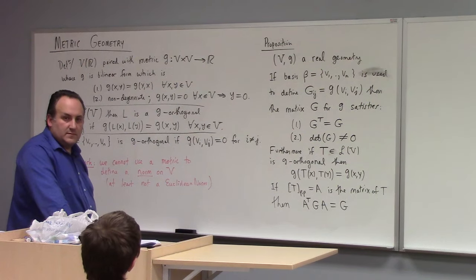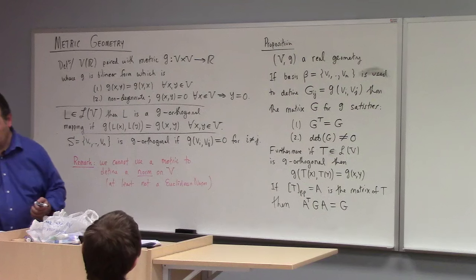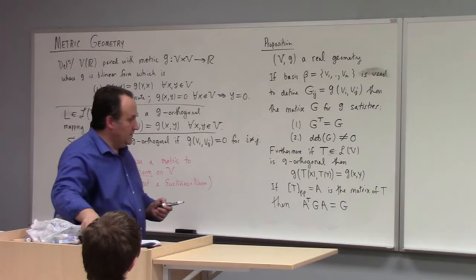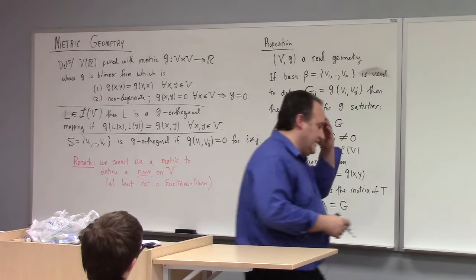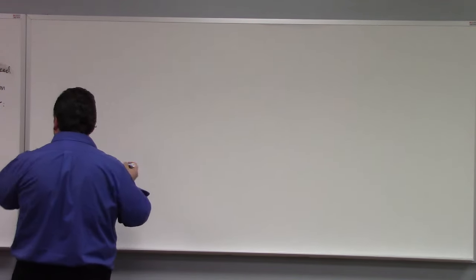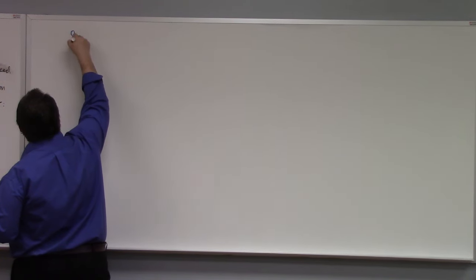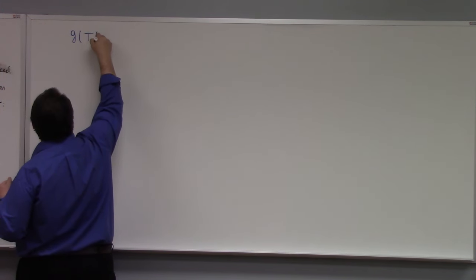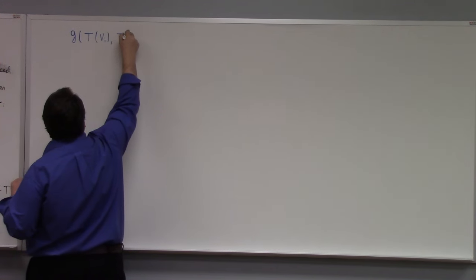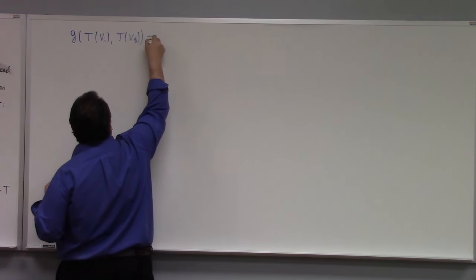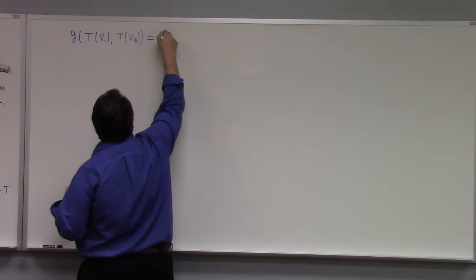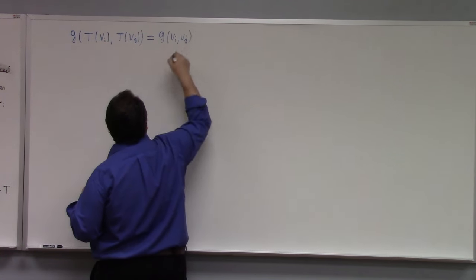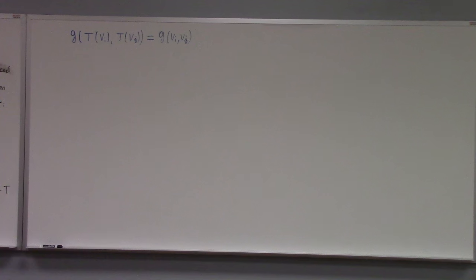The proof is not in my notes. Maybe we should work it out. Let's try. Notice we have G(T(v_i), T(v_j)) = G(v_i, v_j) by assumption.